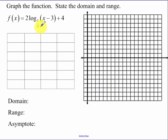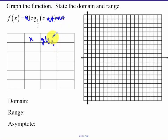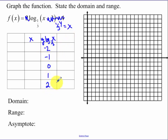Next example where we have our base being 1 third. Remember, the original points you're picking for y — take away all your translations and we just have y equals log base 1 third of x. If you prefer to write this as an exponential: 1 third to the y equals x. Pick easy values for y: negative 2, negative 1, 0, 1, and 2. That's going to get me 9, 3, 1, 1 third, and 1 ninth.